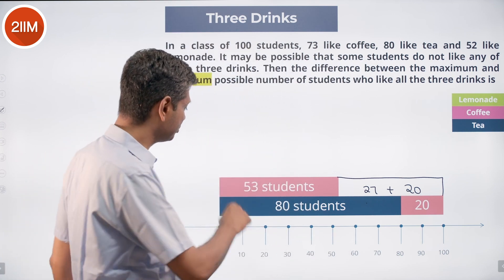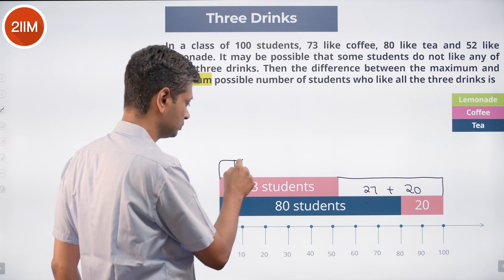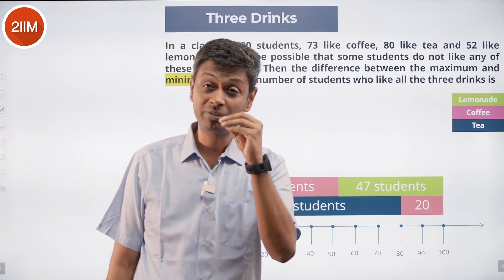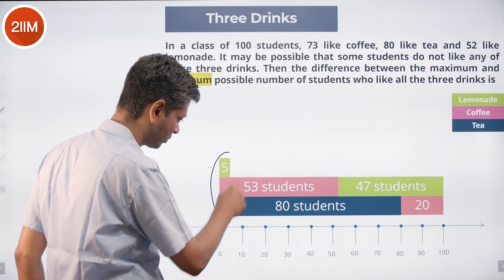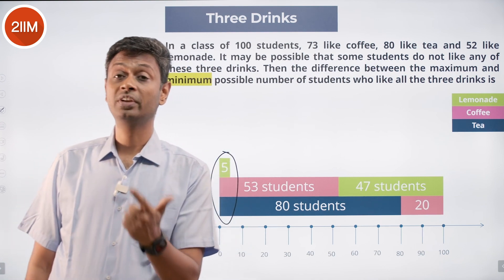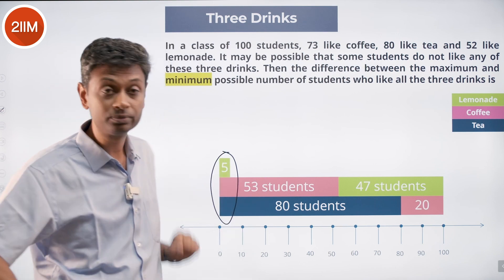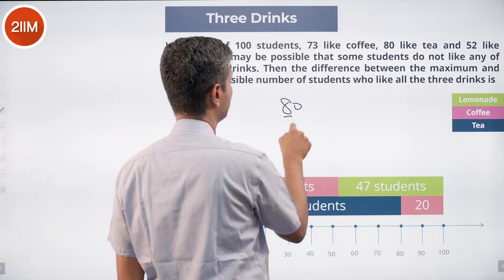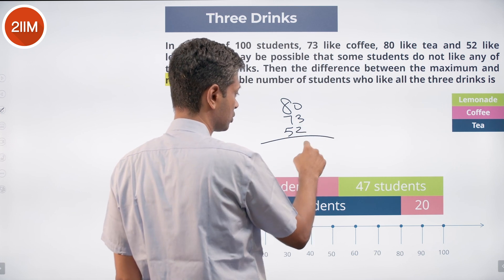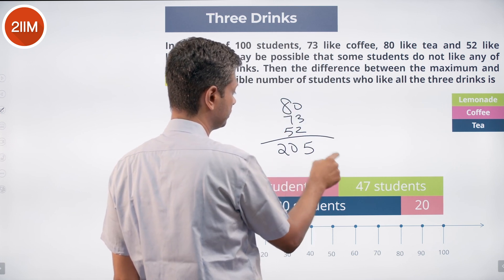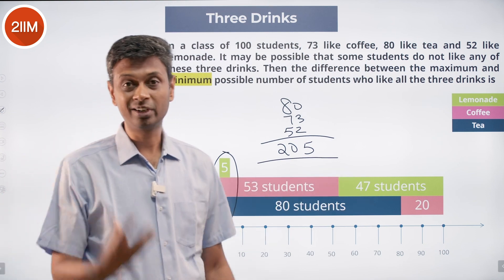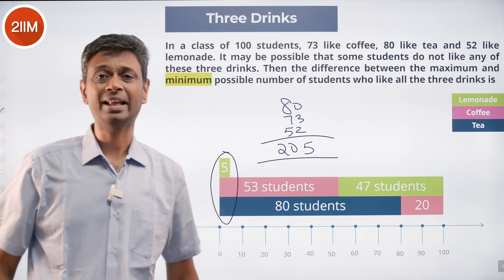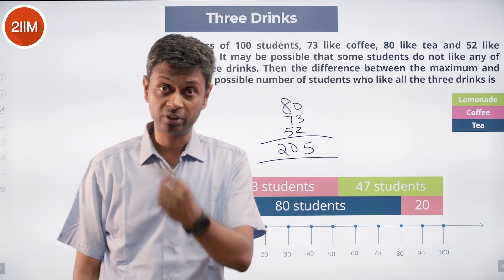But I have 52 lemonade drinkers and only 47 slots accounted for — so there are 5 remaining lemonade drinkers. Those 5 must go into the region where coffee and tea already overlap, meaning those 5 people drink all three drinks. We simply cannot have a scenario where zero students drink all three. Another way to see it: 80 + 73 + 52 = 205, which is 5 more than 200, so at least 5 people must overlap across all three.